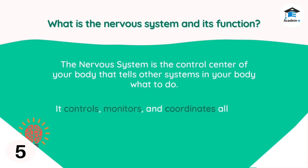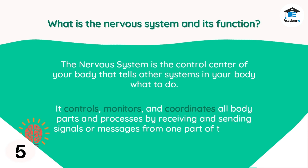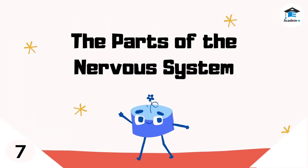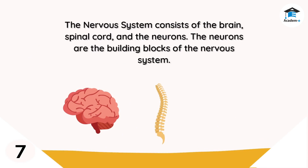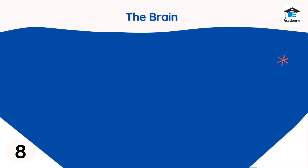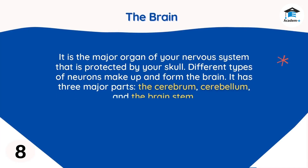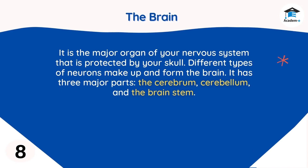The nervous system controls, monitors, and coordinates all body parts and processes by receiving and sending signals or messages from one part of the body to the other. The nervous system consists of the brain, spinal cord, and the neurons. Neurons are the building blocks of the nervous system. The brain is the major organ of your nervous system, protected by your skull.